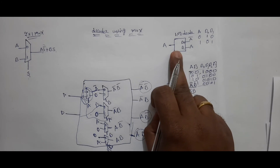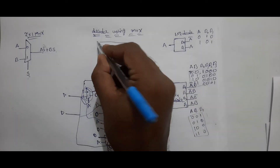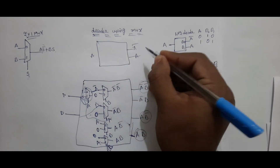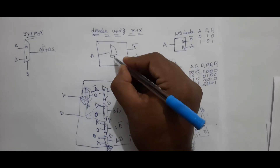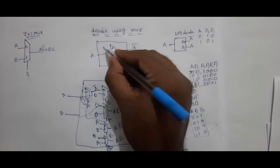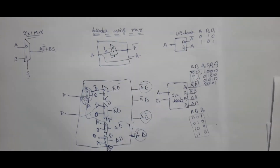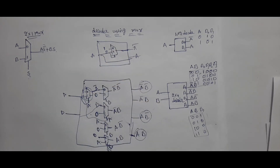Next, the 1x2 decoder. How can I implement this? This is one box with A as the input and outputs A and A-bar. You need one 2x1 MUX. The selection line is A. If 0, then 1 is connected; if 1, then 0 is connected. A is connected directly. How many 2x1 MUXes are required to implement a 1x2 decoder? The answer is 1.